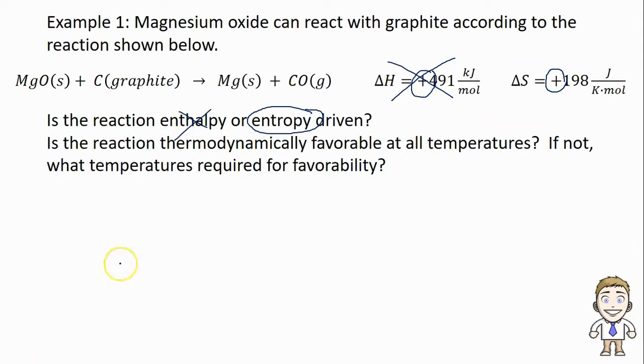Now the second part to the question asks if this reaction will be thermodynamically favorable at all temperatures. For a question like this I always like to imagine plugging in the delta H I was given, in this case positive 491, and subtracting out some different possibilities for T delta S. Now in this case I know my T delta S has to be positive because temperature in Kelvin is always positive and the delta S is also positive.